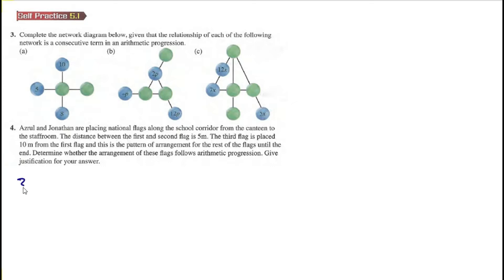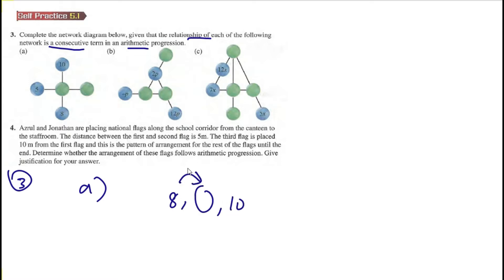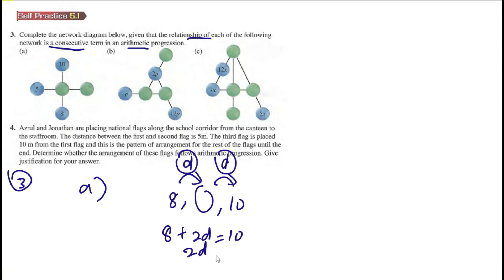For number three, given that the relationship is an arithmetic progression, we know the common difference d is the same. We have 8, unknown, 10. So 8 plus 2d equals 10, which gives 2d equals 2, so d equals 1. The next term is 8 plus 1 equals 9, so the box is 9.